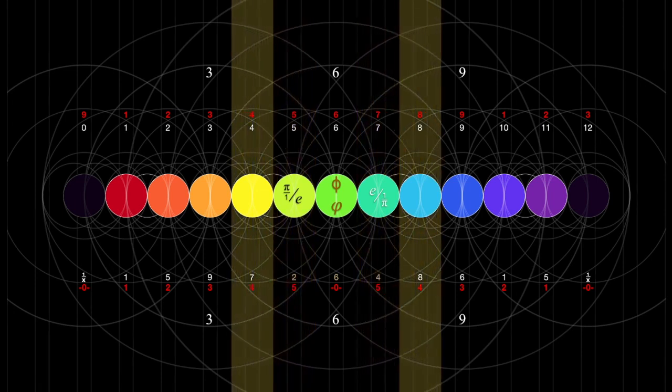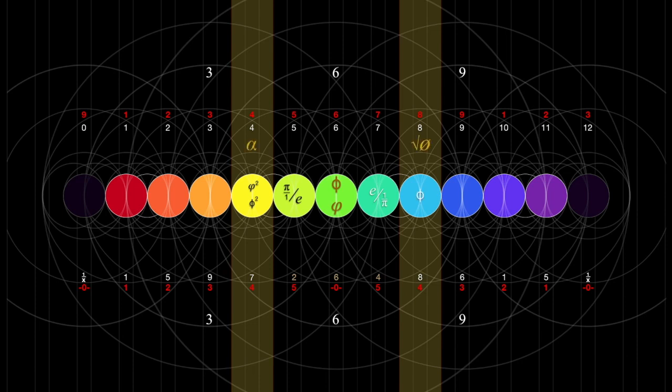The next conjunction manifests the squares of phi, framed by its square root and the fine structure constant alpha, giving rise to yet another pair of new constants.